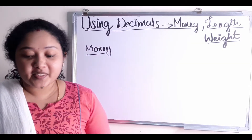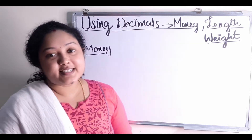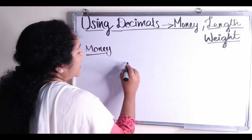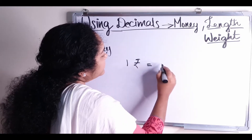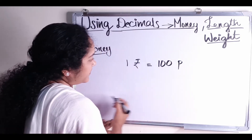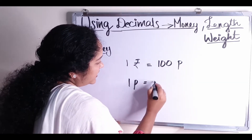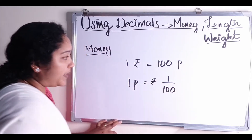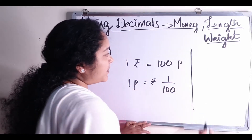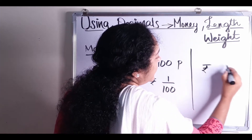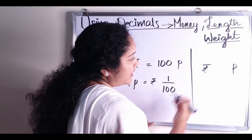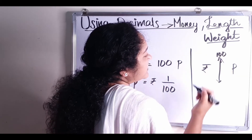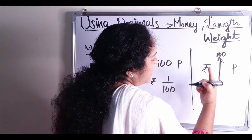First, money. In India, the currency is called rupees and coins are called paise. That is, 1 rupee is equal to 100 paise. 1 paise is equal to 1 by 100 rupees. Easy to remember: rupees and paise. Rupees is greater than paise, and their power of relation is 100. That means 100 paise makes 1 rupee.